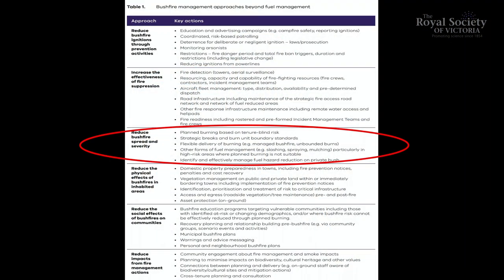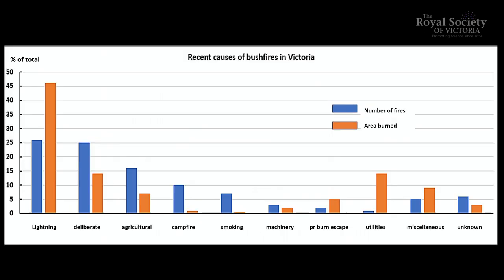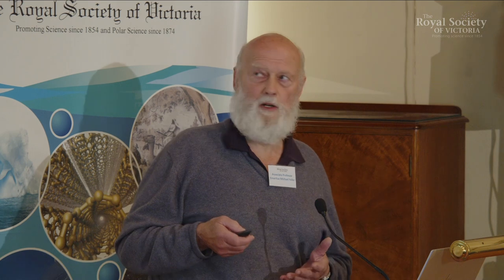Looking at what's supposed to be done for fire management in Victoria — it's all focused around fuel reduction. But if you look at causes of fires, lightning causes about 25% of fires in Victoria, while 75% are caused by people. Of the area burnt, about 45% is from lightning and 55% by people. Of those people-caused fires, deliberately lit or arson-type fires account for about 25% of all fires in the state and the second largest chunk of area burnt. So that's the sort of thing that fire management should also be focusing on.